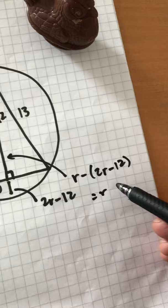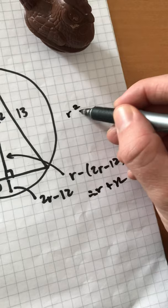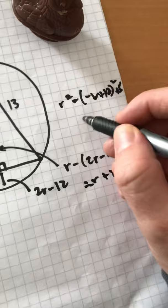Then, using Pythagoras on this little triangle, R squared is equal to negative R plus 12 squared plus 5 squared. And simplifying for R, this is going to be 169 over 24.